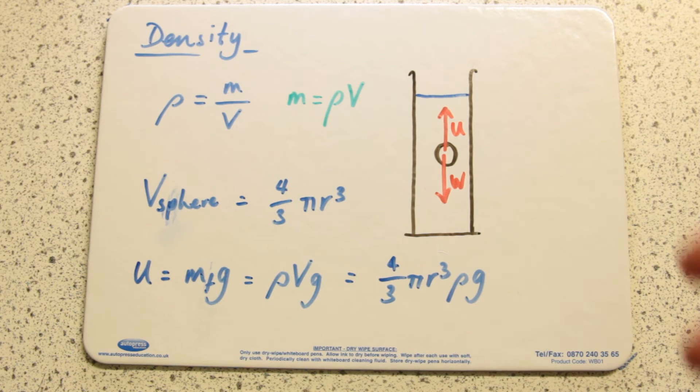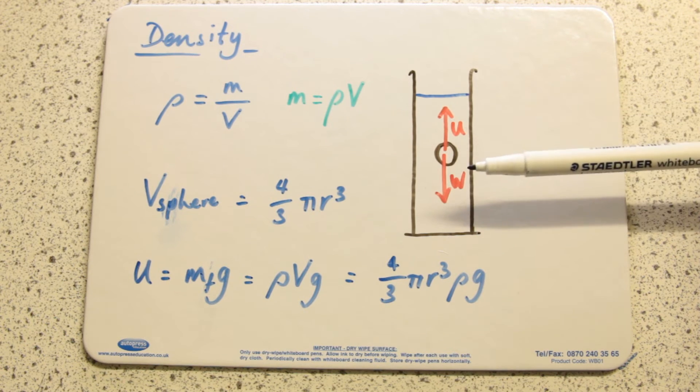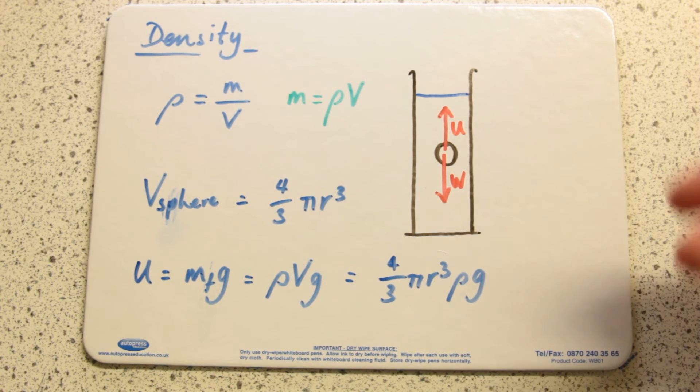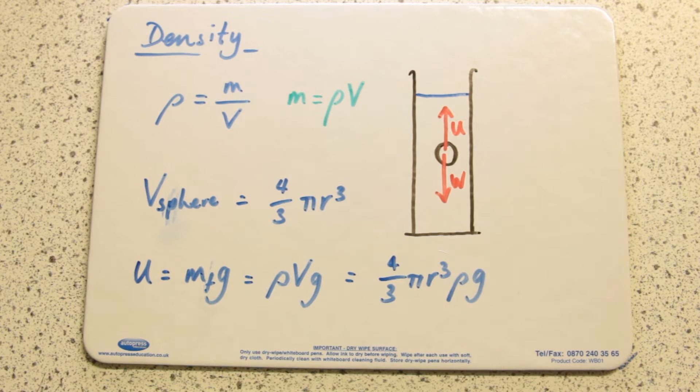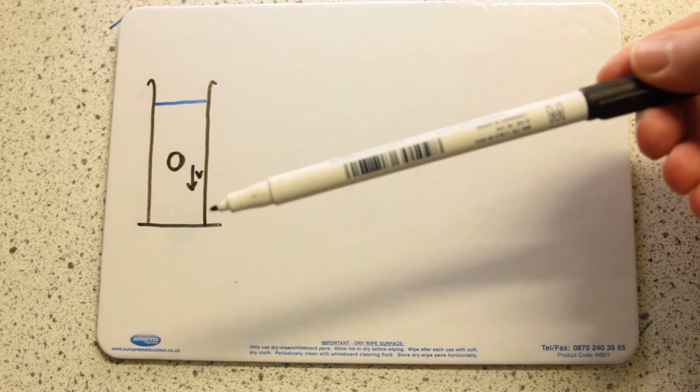We can sub in the equation for the volume of a sphere, so we get 4/3 πr³ρg. These are different ways you can use this principle. This is quite rare though, because in this case the density of the sphere would be equal to the density of water.